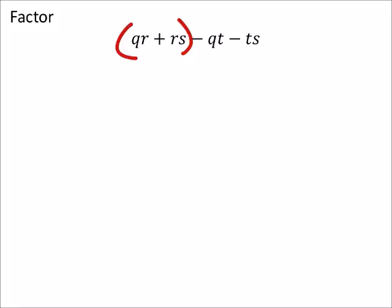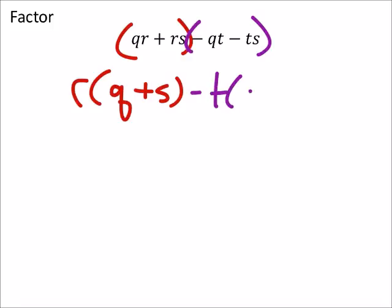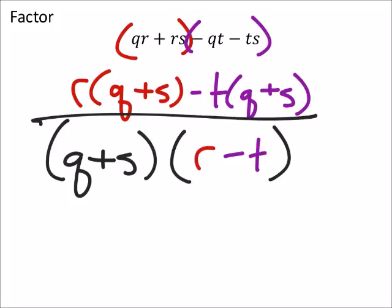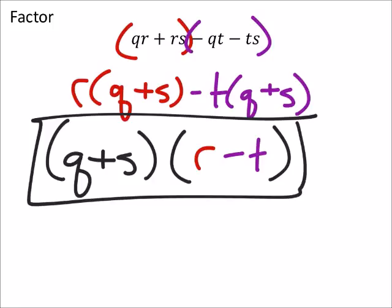So if I look at these two and factor out an R, then I have Q plus S. And in the second set, I'm just going to factor out a negative T specifically, which leaves me with Q plus S. So I can factor out a Q plus S, and I'm left with R minus T. No need for substitution on this one.